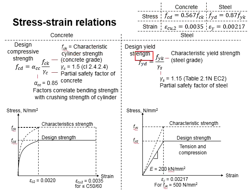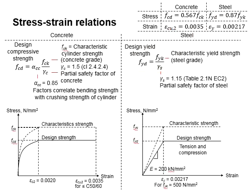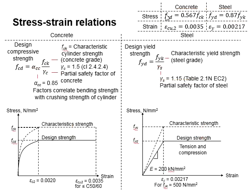Substituting the relevant values into the design yield strength of steel, the design strength of steel is equal to 0.87 FYK. These design strengths are normally smaller than the characteristic strength. The difference is mainly due to the factors of safety applied to the characteristic strength.